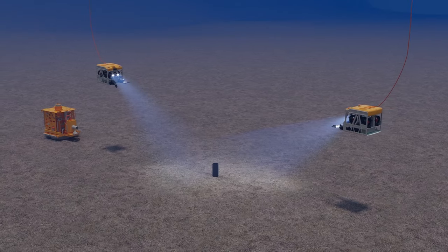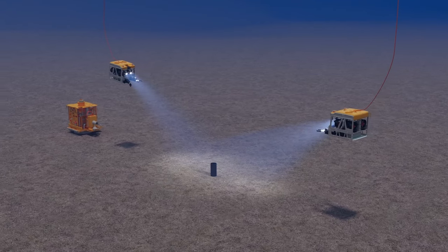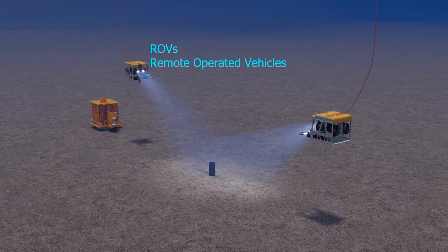In the shallow water, human workers can be sent down, but in the deep sea, ROVs serve as workers.